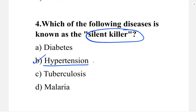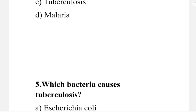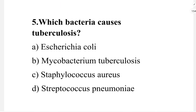Next question: which bacteria causes tuberculosis? Option A: E. coli. Option B: Mycobacterium tuberculosis. Option C: Staphylococcus aureus. Option D: Streptococcus pneumoniae. The correct answer is option B, Mycobacterium tuberculosis.